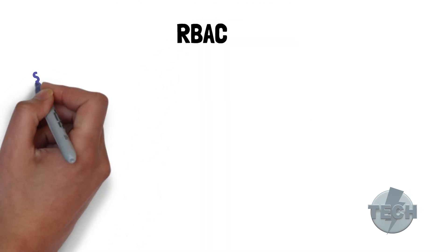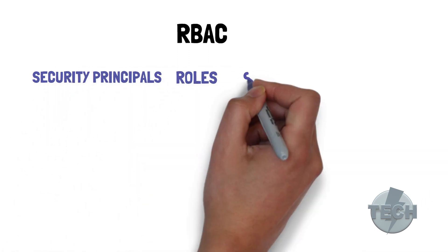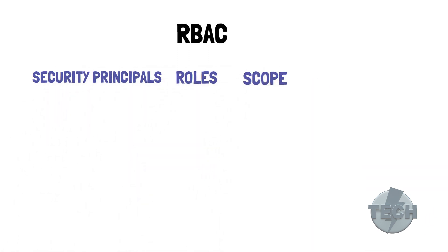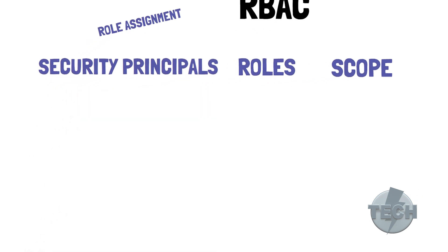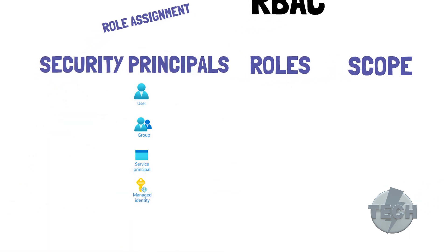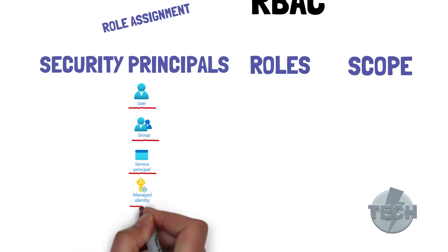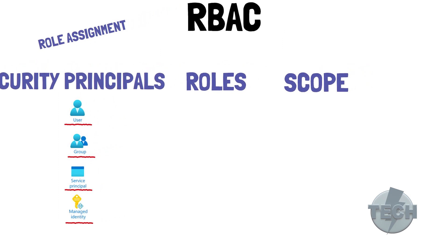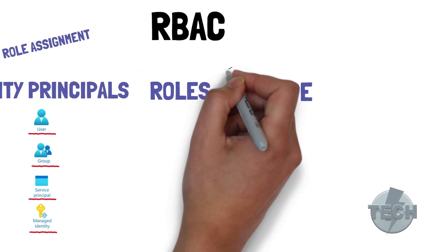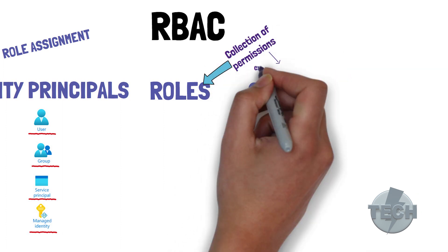In Azure, we have security principles, roles, scopes, and role assignments. The security principle is an object that represents a user, group, service principle, or managed identity which requires access to an Azure resource. Then we have roles, which are a collection of permissions, such as read, write, or delete.